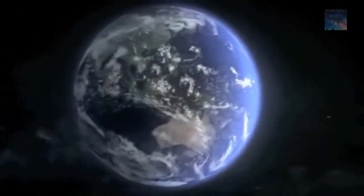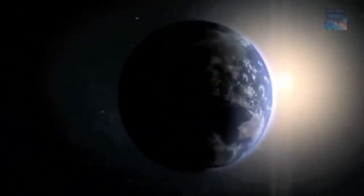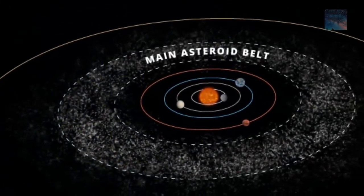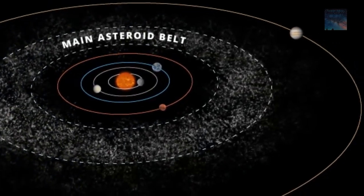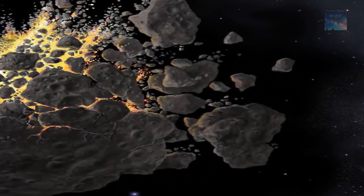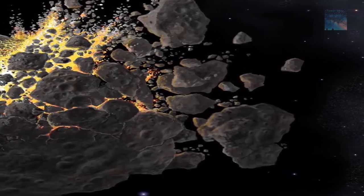For years, asteroids were thought of as the leftovers of planet formation, chunks of material that never quite made it to planet size and that were drawn into the crowded belt of rocky remnants that circles the sun between Mars and Jupiter.